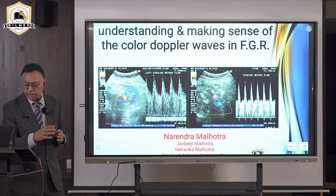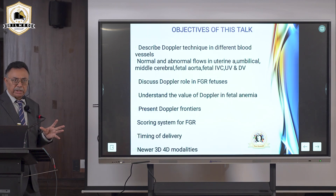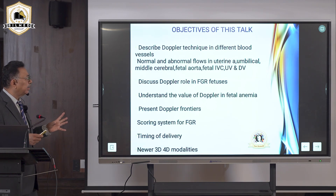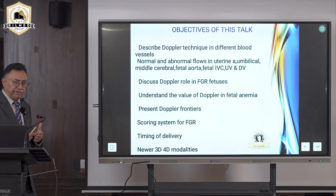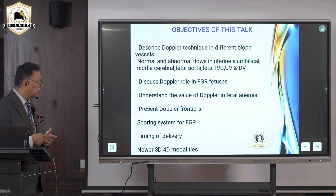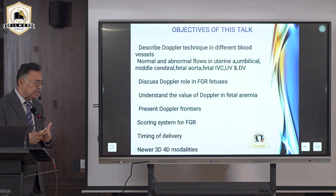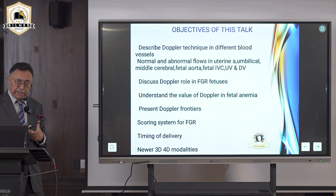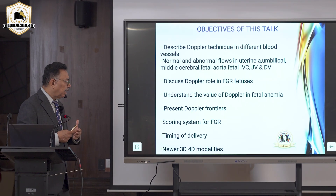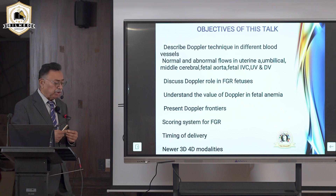We are going to cover techniques broadly, then normal and abnormal flow in the uterine, umbilical, middle cerebral, fetal aorta, fetal veins, inferior vena cava, umbilical vein, and ductus venosus. We'll discuss the role of Doppler in growth-retarded fetuses, its value in picking up fetal anemia, the scoring system for fetal growth, how to time delivery, and briefly 3D color Doppler.